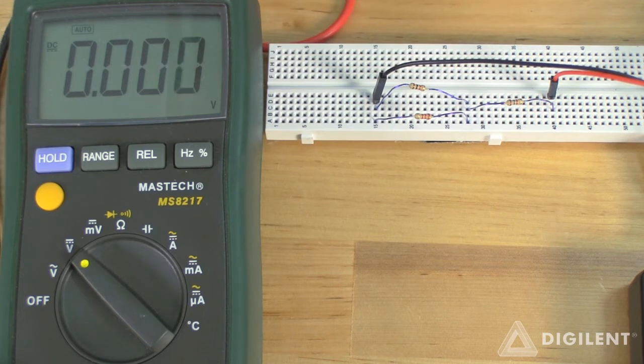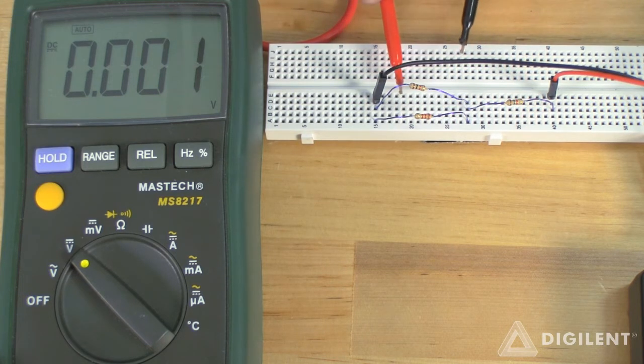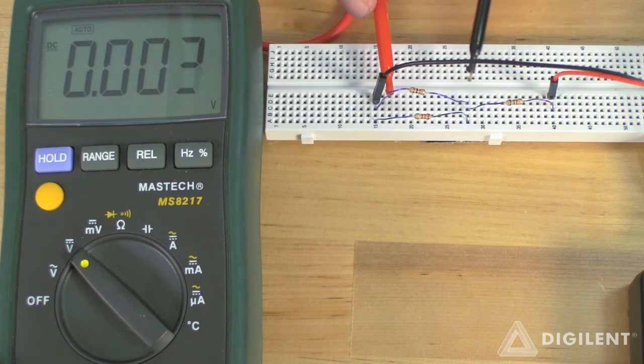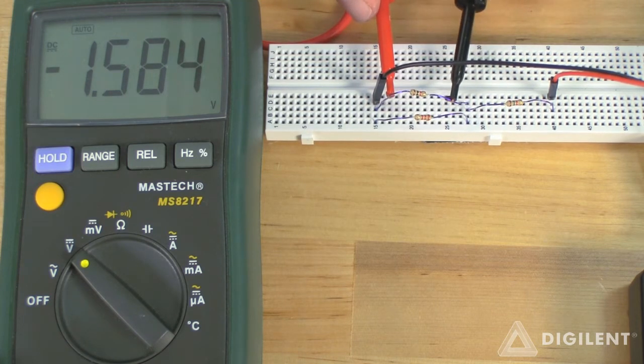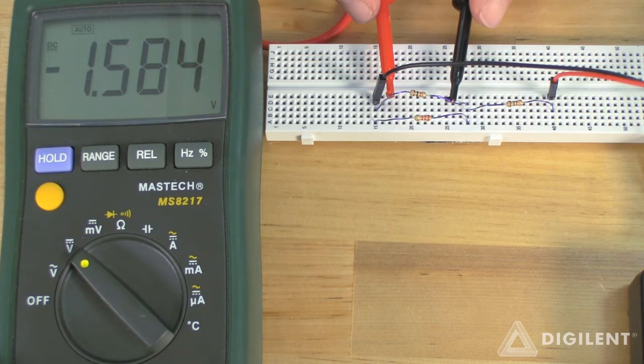My defined voltage polarity for the 1 kiloohm resistor has this terminal being at the higher voltage than this terminal. When I make that measurement, I get minus 1.58 volts.